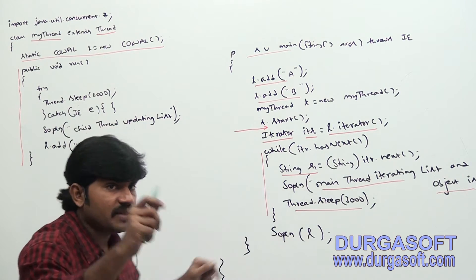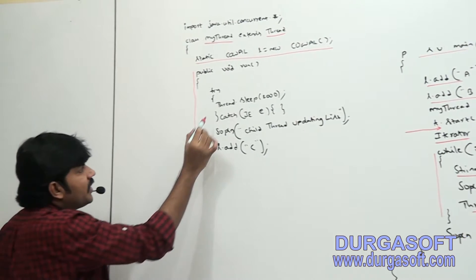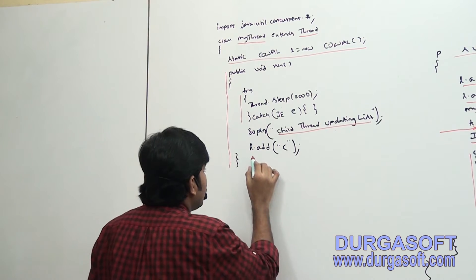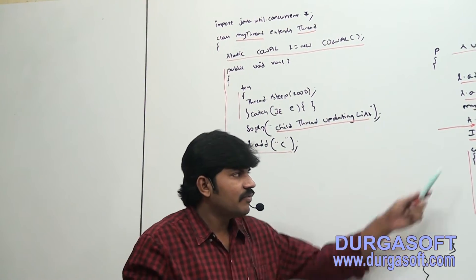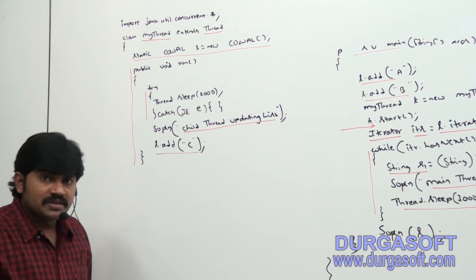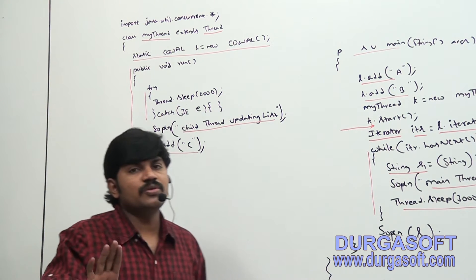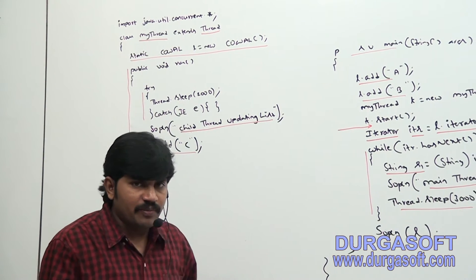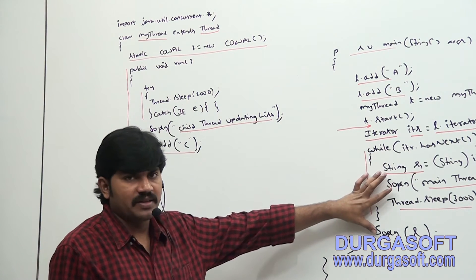Meanwhile, the child thread has already started. What is the child thread doing? In the run method, the child thread waits for some time, then updates the list by adding elements. While the main thread is performing iteration, the child thread is performing an update operation. Can we get a ConcurrentModificationException? No chance at all, because it is a concurrent collection and the update operation is performed on a separate cloned copy.